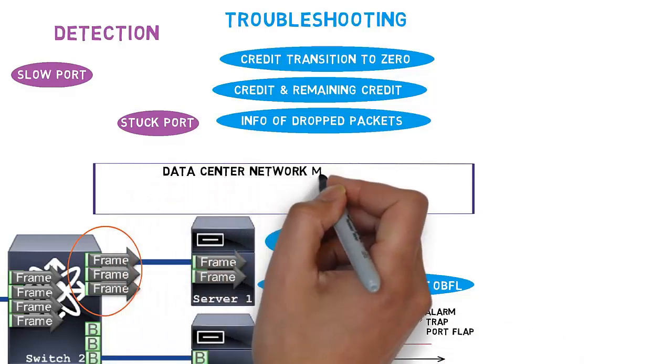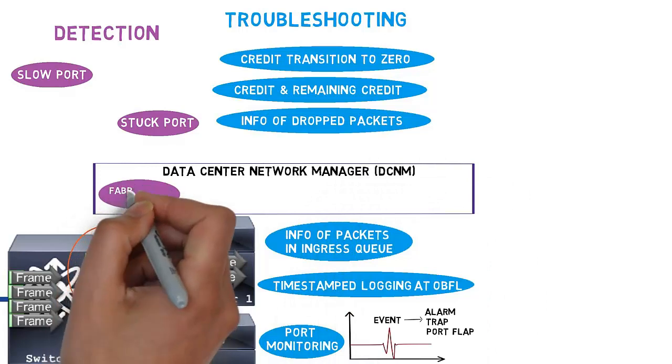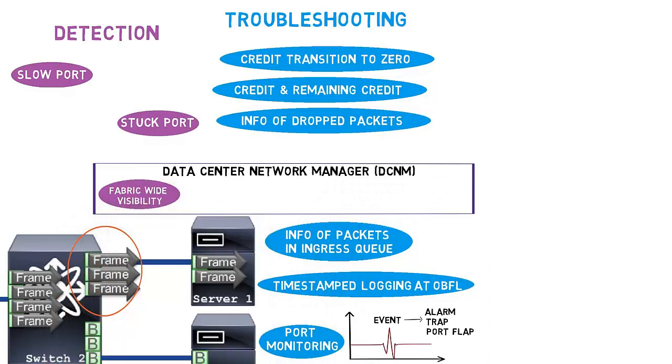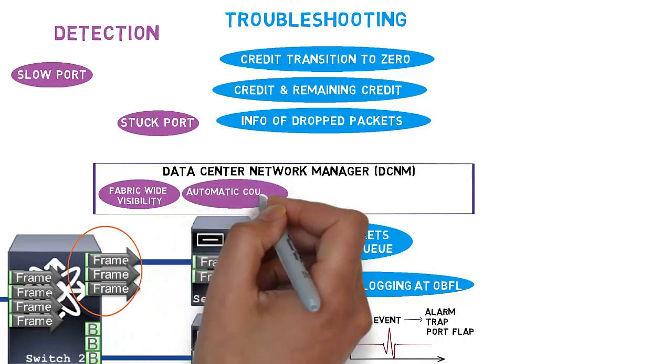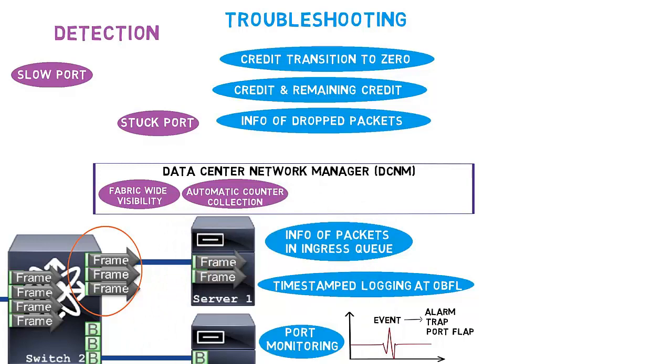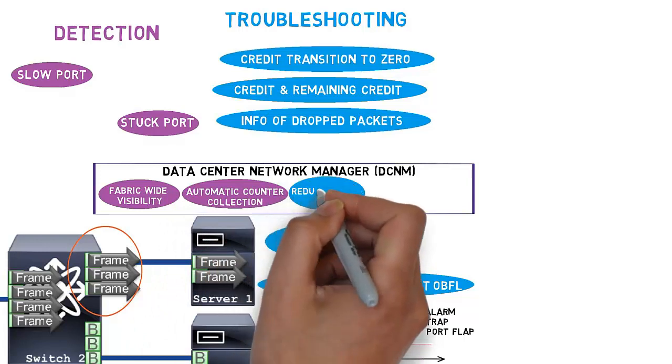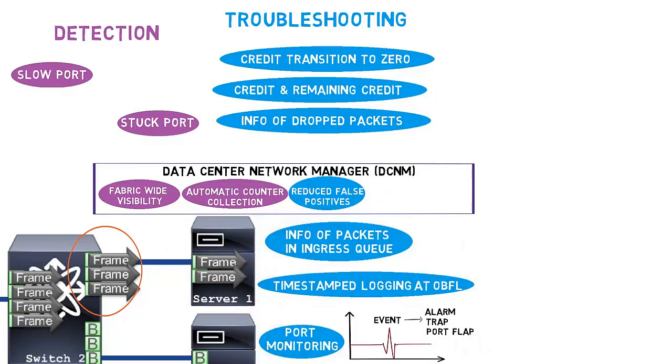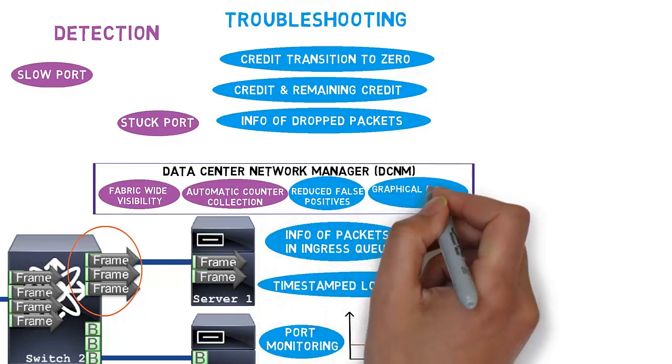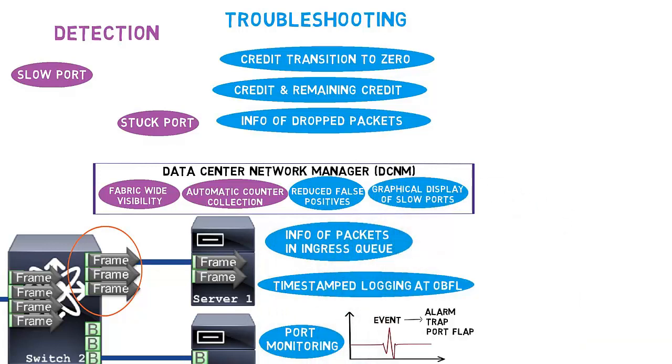On top of that, Cisco Data Center Network Manager provides a fabric-wide visibility for consolidating thousands of ports in a single view. DCNM automates the collection of slow drain counters and makes it extremely intuitive to troubleshoot the situation by reducing false positives and showing fluctuations of counters in graphical format.